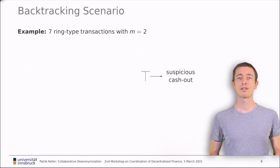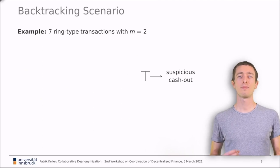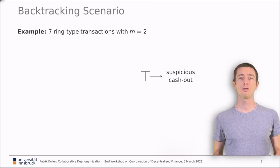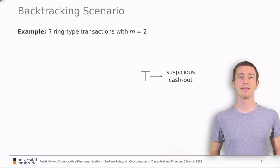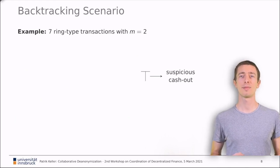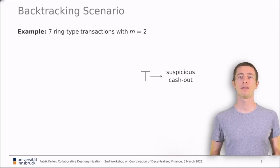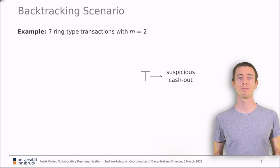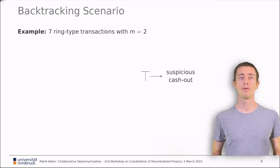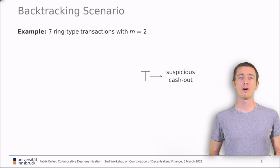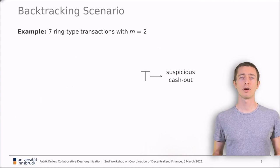So, for these two types of transactions, we want to study the what we call backtracking scenario. Assume that we have a suspicious cashout on the right. This might be a million dollar worth of transactions that is about to be exchanged to cash. You suspect that this money is of illegal origin and you want to trace back the cash flow where it comes from. Here, we are looking at ring type transactions. So, they all have a single output. And in order to keep my slide simple, I use small ring type transactions where M equals 2. In practice, M would be higher. For example, Monero uses M equals 11.